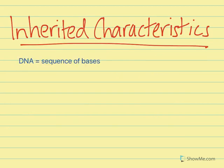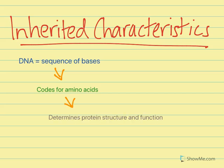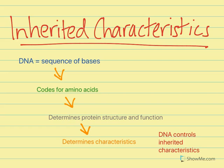If we look at how DNA controls inherited characteristics of an organism: firstly, DNA is basically a sequence of different bases. This sequence of bases, which are in the nucleotides of the DNA molecule, codes for different amino acids. The sequence of amino acids in a protein determines its structure and function, and this in turn determines an organism's characteristics. Overall, DNA controls inherited characteristics as the DNA is passed from parent to offspring.